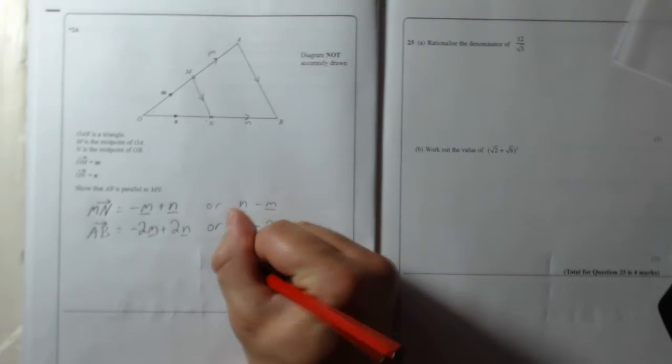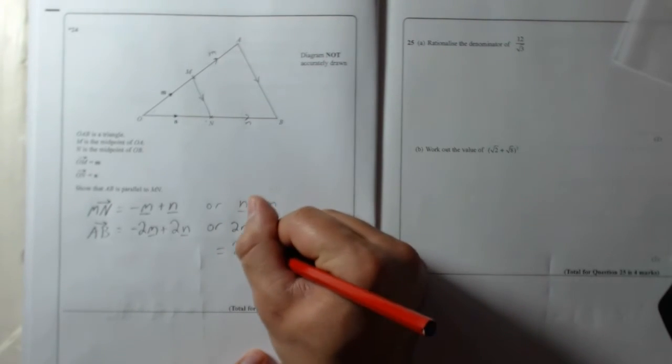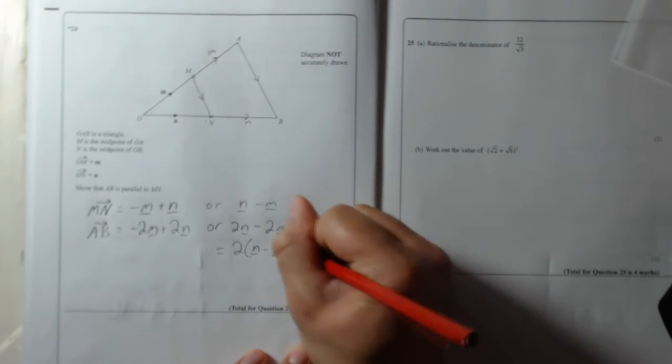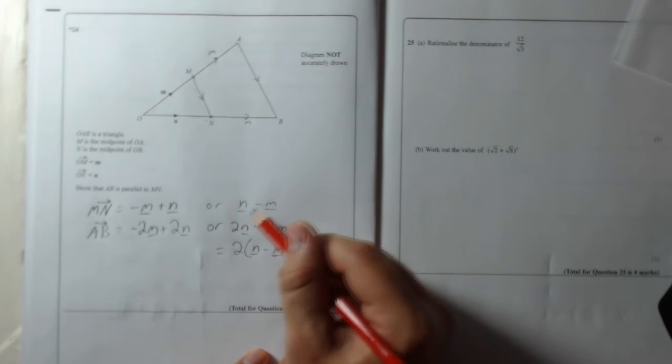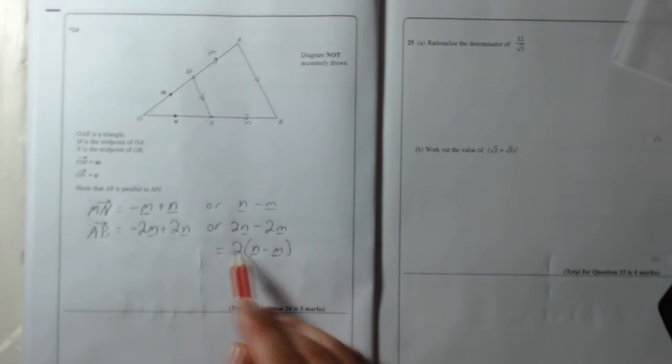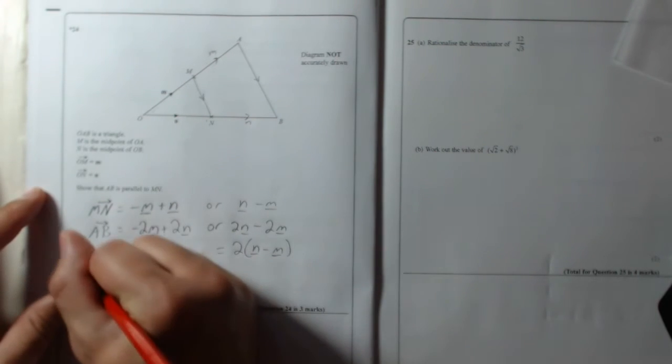Just to show that it is exactly the same using this one, you can put equals 2 and then take that as a common factor: N minus M. So N minus M, remember, is what MN is. There's N minus M and there's 2 of them: 2N minus M.